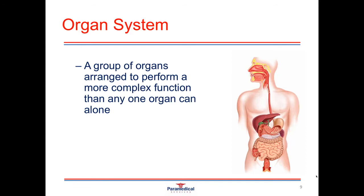An organ system is a group of organs arranged to perform a more complex function than any one organ can alone. An example of this is our digestive system, which is made up of multiple different organs including the tongue, salivary glands, the oral cavity, the esophagus, the stomach, the liver, the gallbladder, the pancreas, the large and small intestines, and all the accessory organs involved. The digestive system allows us to take in solid foods and liquids, break them down into microscopic substances, which can be absorbed and used as fuel at a cellular level.